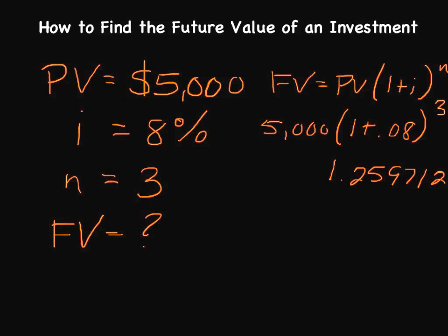And we're simply going to take that and we're going to multiply that by our original investment of $5,000. And if you do that, that gets you $6,298.56. And so that would essentially be what our future value is. So the way you would use this in a sentence is if we were to invest $5,000 today for three years earning 8% interest compounded annually, we would have $6,298.56 at the end of those three years.